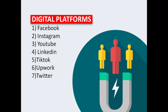These are digital platforms you can use to sell your product, whether physical or digital. They include Facebook, Instagram, YouTube, LinkedIn, TikTok, Upwork, and Twitter — and there are more like Fiverr and the rest. These are social media platforms that people have used over time to sell products and they are proving to be successful.